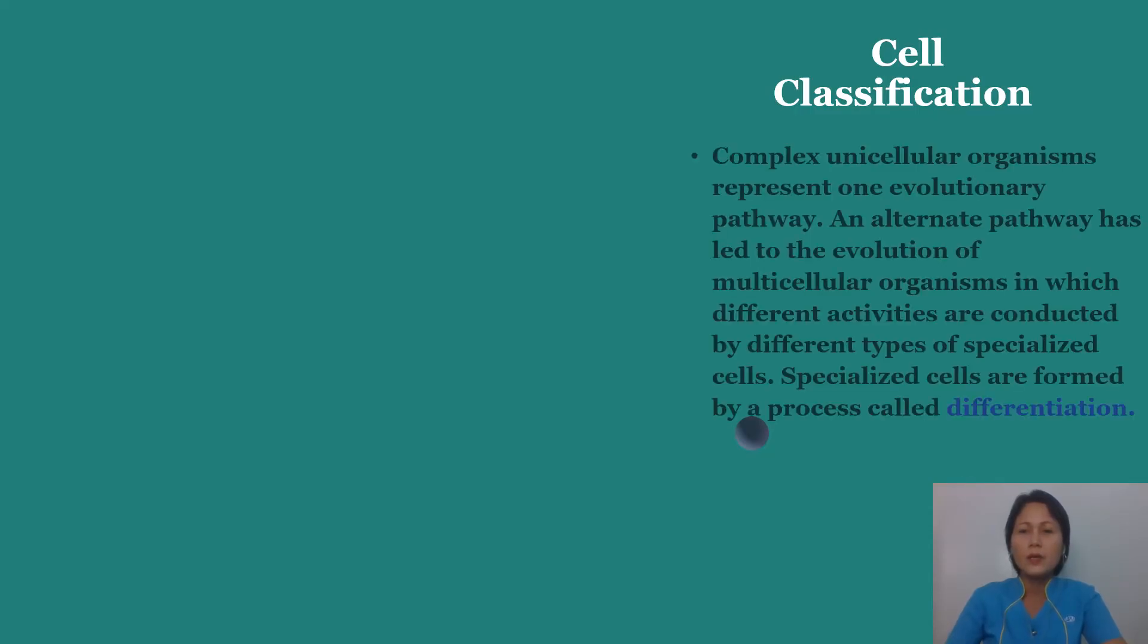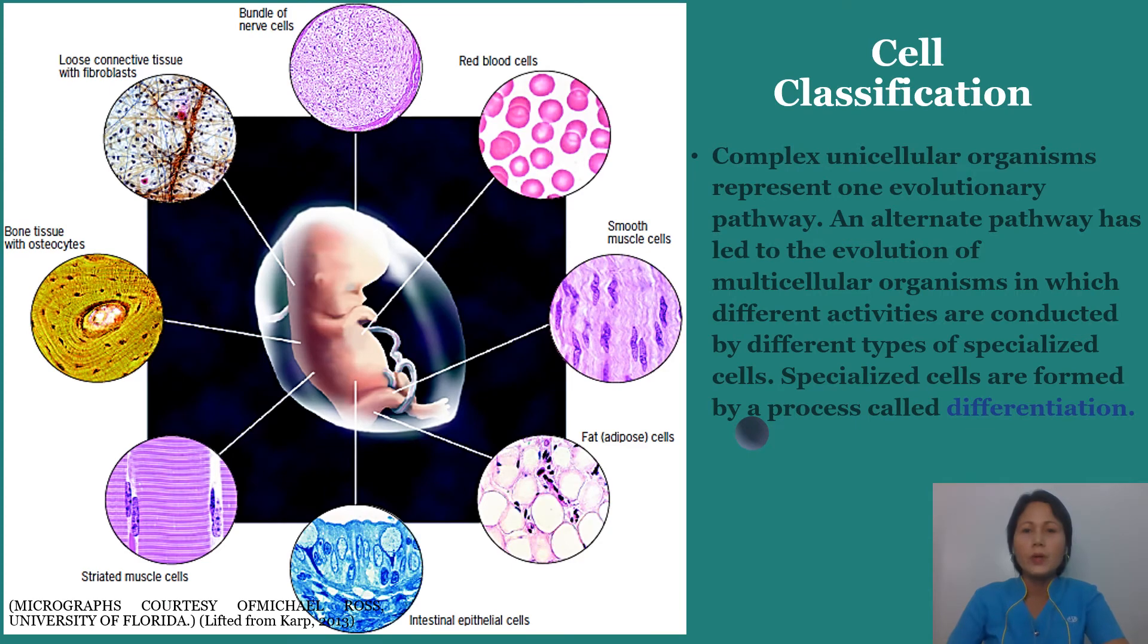Complex unicellular organisms represent one evolutionary pathway. An alternate pathway has led to the evolution of multicellular organisms in which different activities are conducted by different types of specialized cells. Specialized cells are formed by a process called differentiation. A fertilized human egg, for example, will progress through a course of embryonic development that leads to the formation of approximately 250 distinct types of differentiated cells.